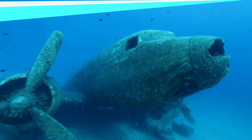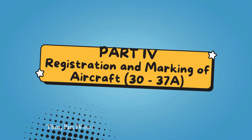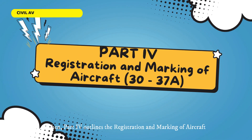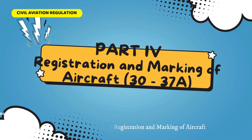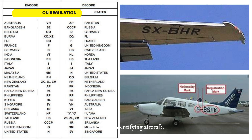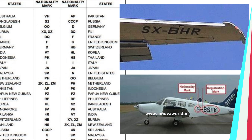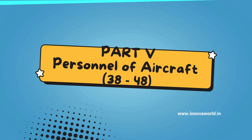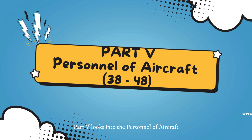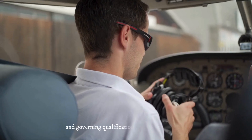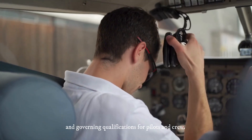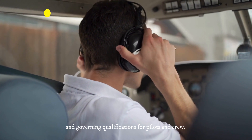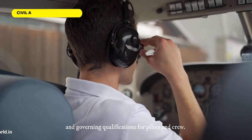Part 4 outlines the registration and marking of aircraft, which is crucial for identifying the aircraft. Part 5 looks into the personnel of aircraft, governing qualifications for pilots and crew members.